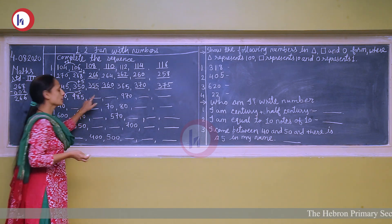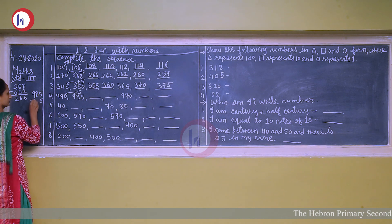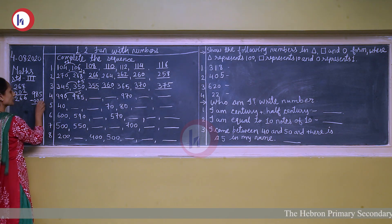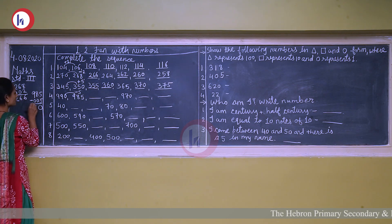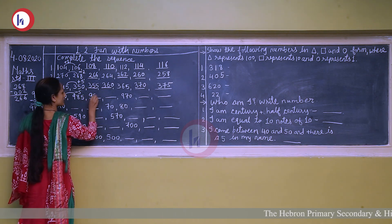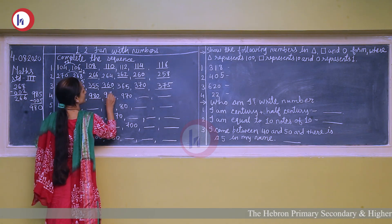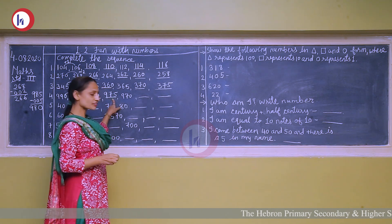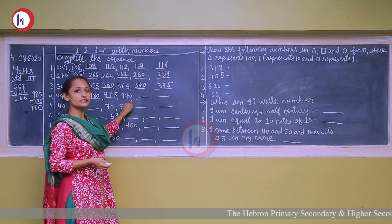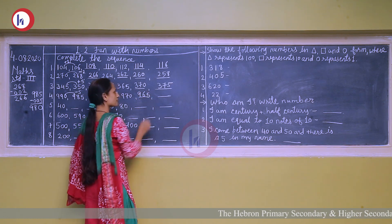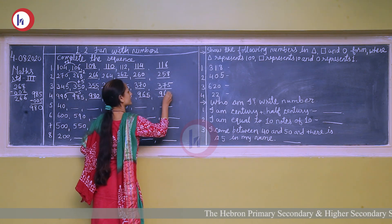If you are not sure of the next number, you can do: 985 minus 5. Put a zero, 5 minus 5 is 0, 8 minus 0 is 8, and 9 minus 0 is 9. So our next number is 980. Again subtract 5: 975. Again subtract 5: 970, which is given. Again subtract 5 from 970: 965. Next, minus 5 from 965: 960.